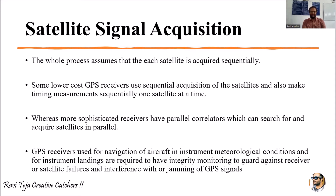Sophisticated or costly receivers used in defense and similar mechanisms have parallel correlators. A single receiver can parallelly acquire signals from multiple satellites simultaneously, which we call a parallel correlator that acquires signals from satellites in parallel.